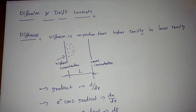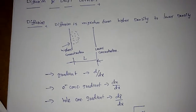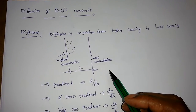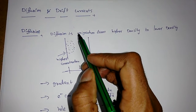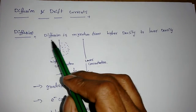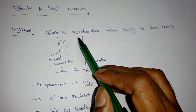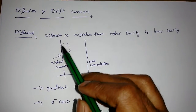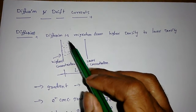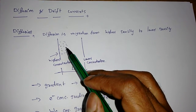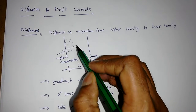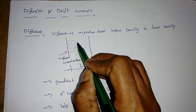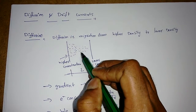In this video I am going to discuss two important topics in the electronic devices course: diffusion and drift currents in semiconductors. Diffusion is a migration from higher density to lower density. Suppose there are electrons or holes at very high concentration — diffusion means these carriers will diffuse from higher to lower concentration, and after some time it will reach equilibrium.